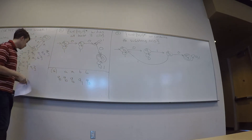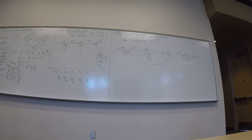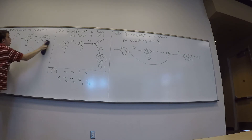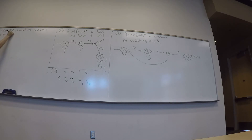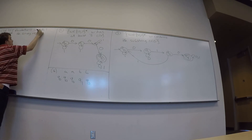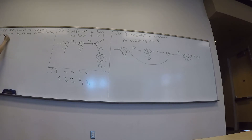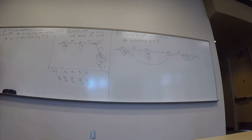Now let's do the really cool example. The language is all strings in {0,1}* such that the binary representation of W is divisible by 5. How do we make a DFA for this?